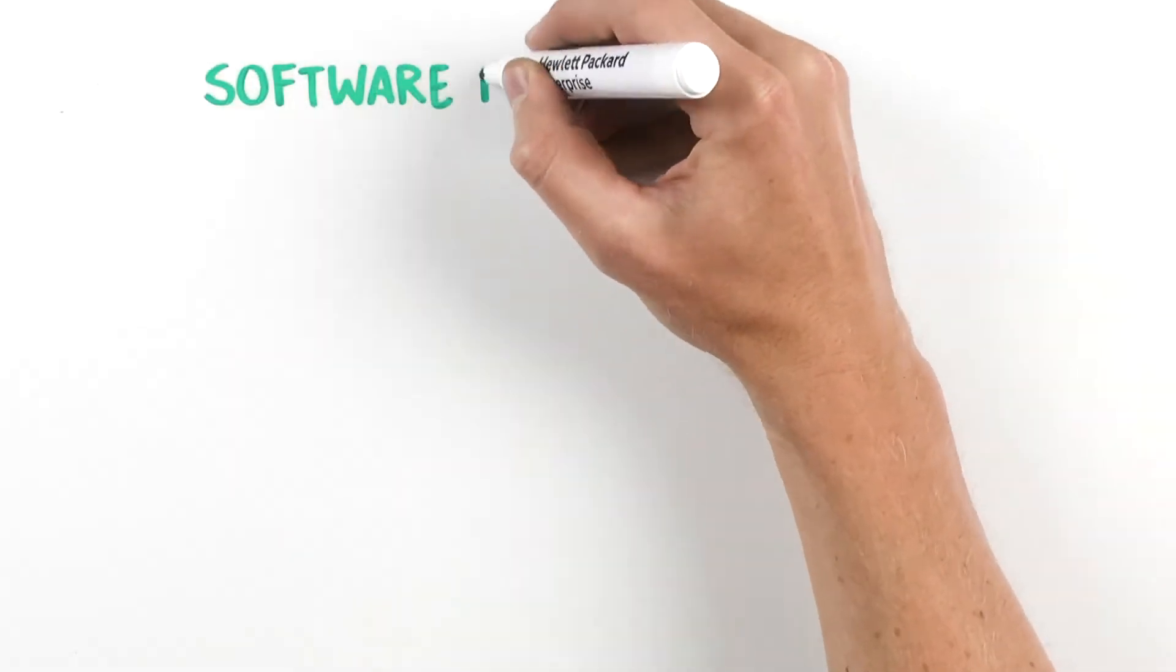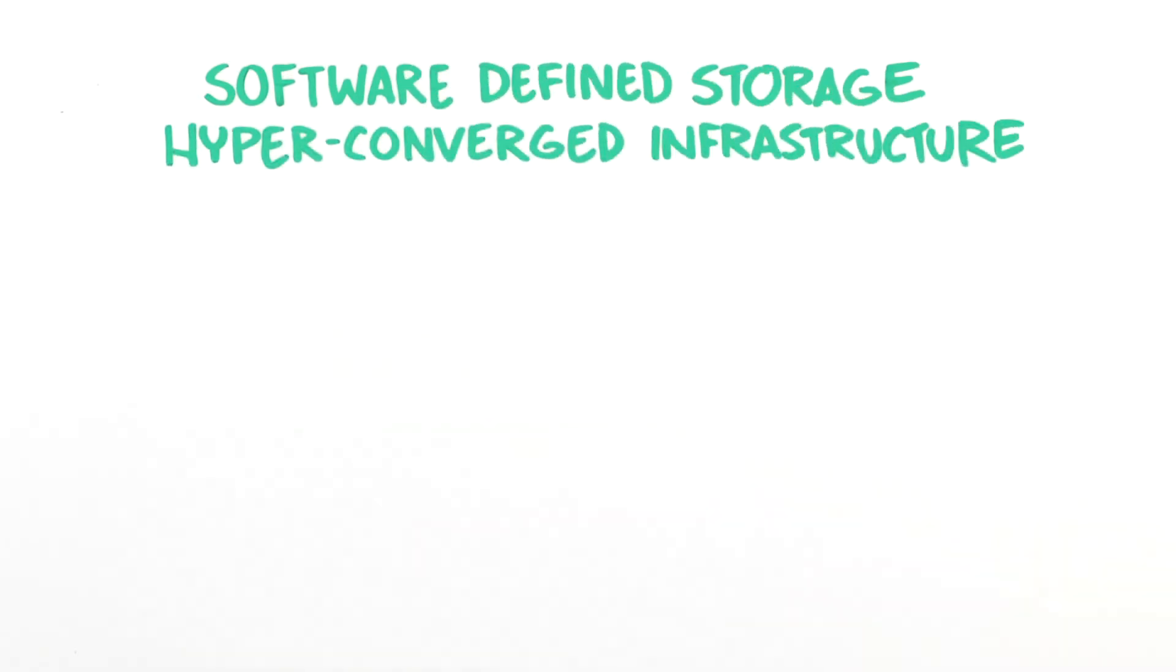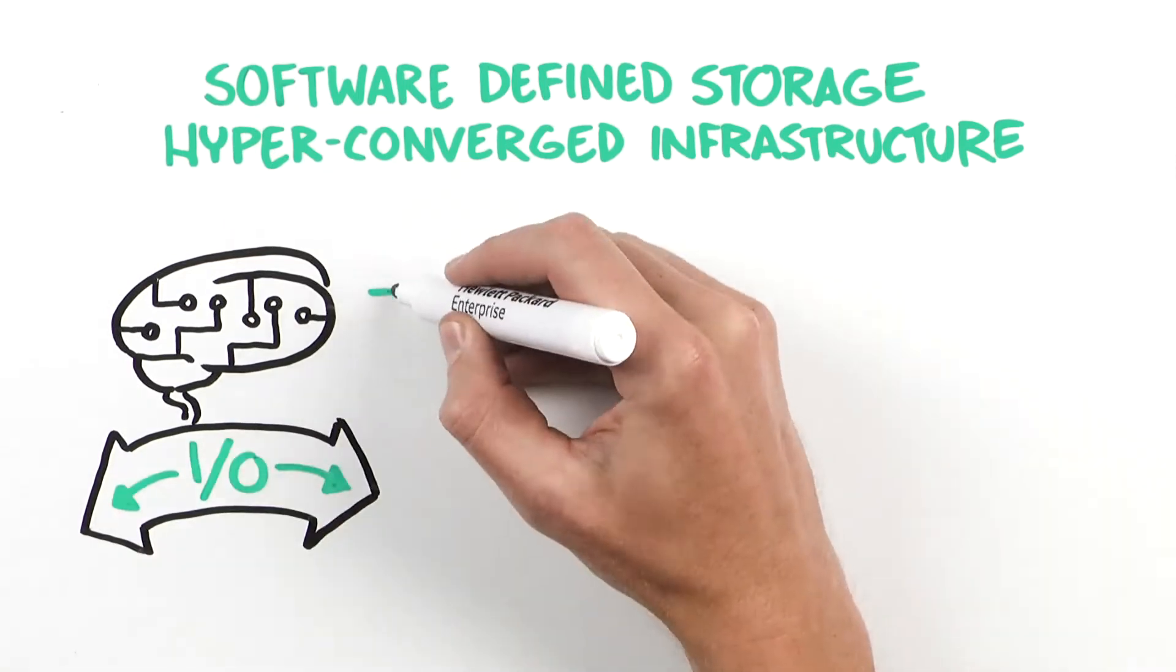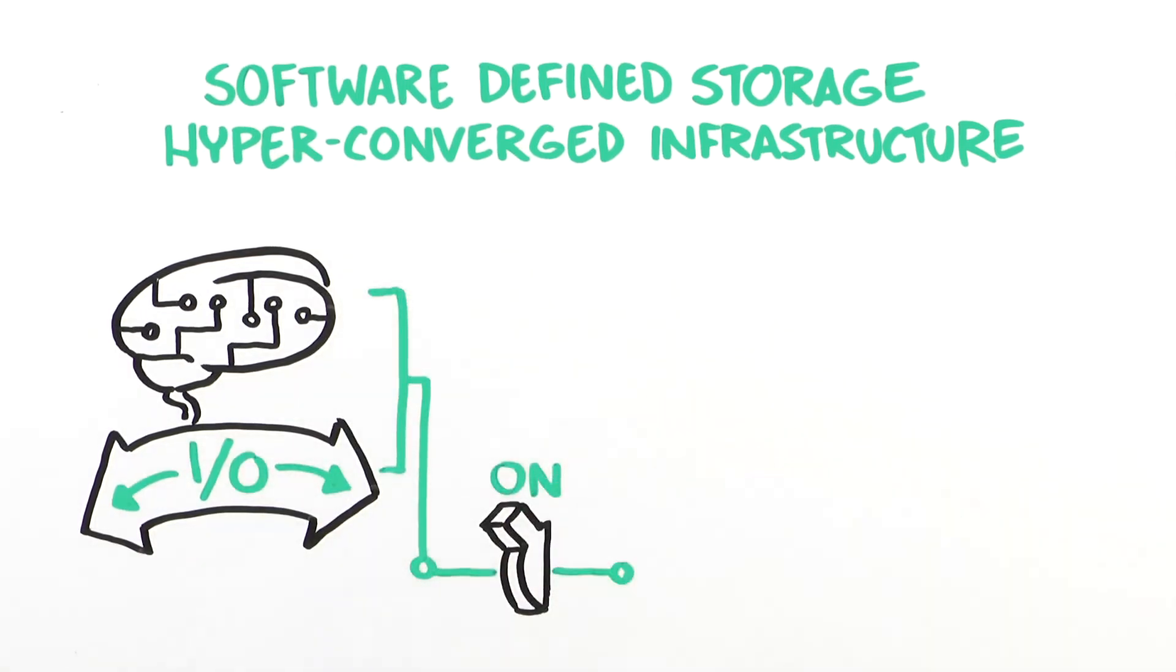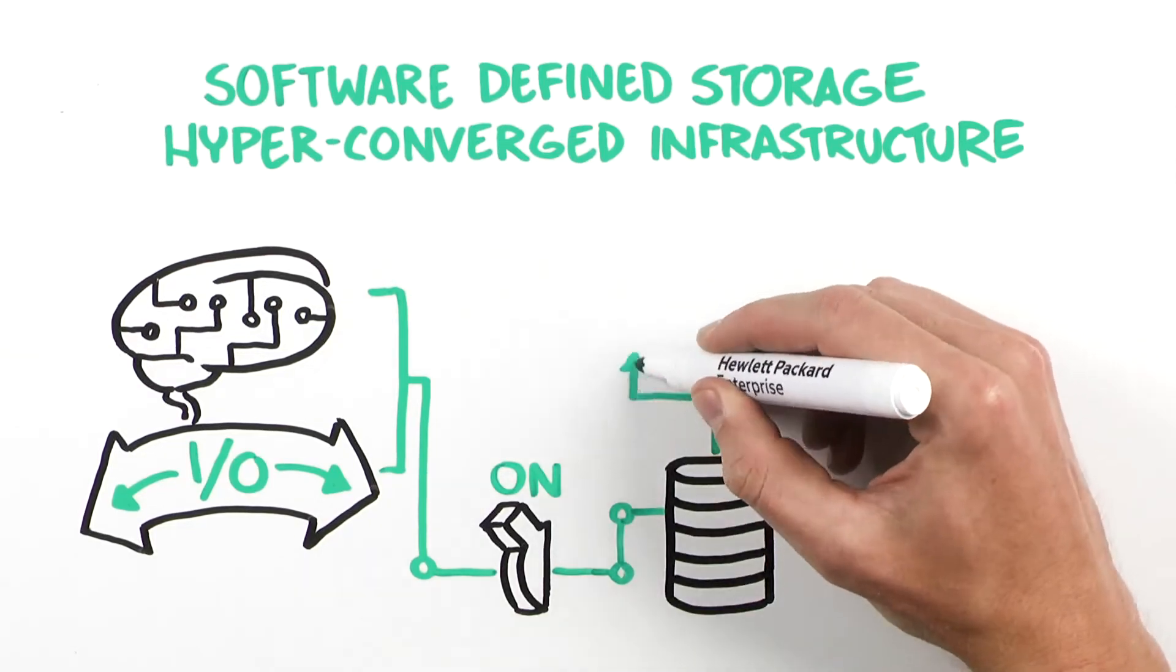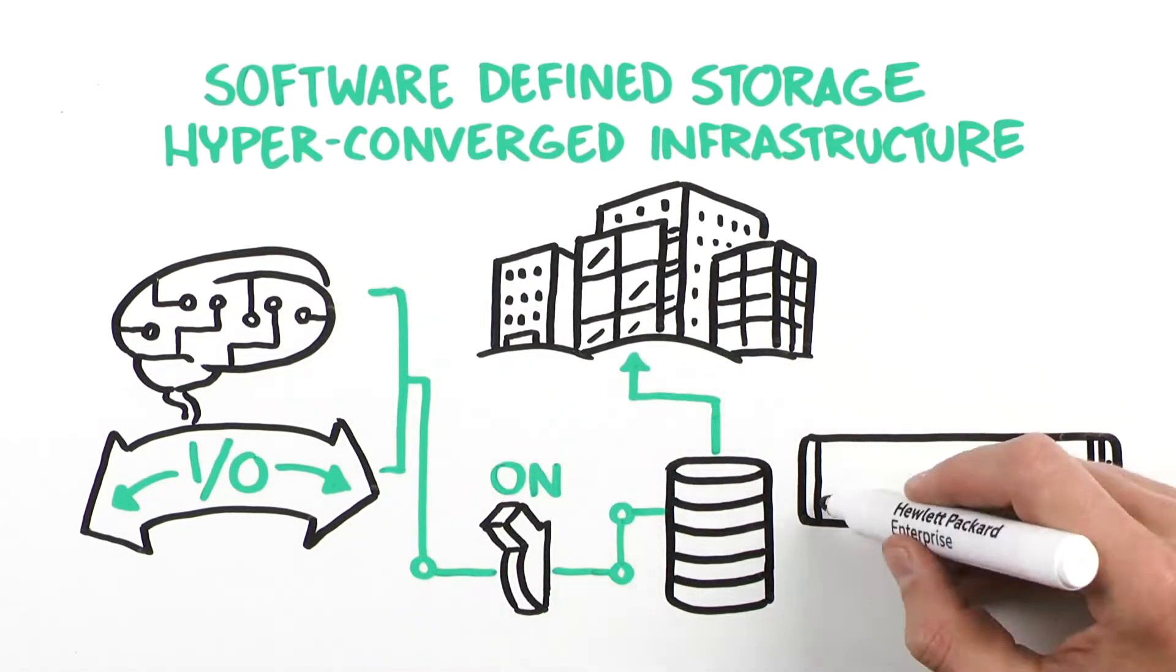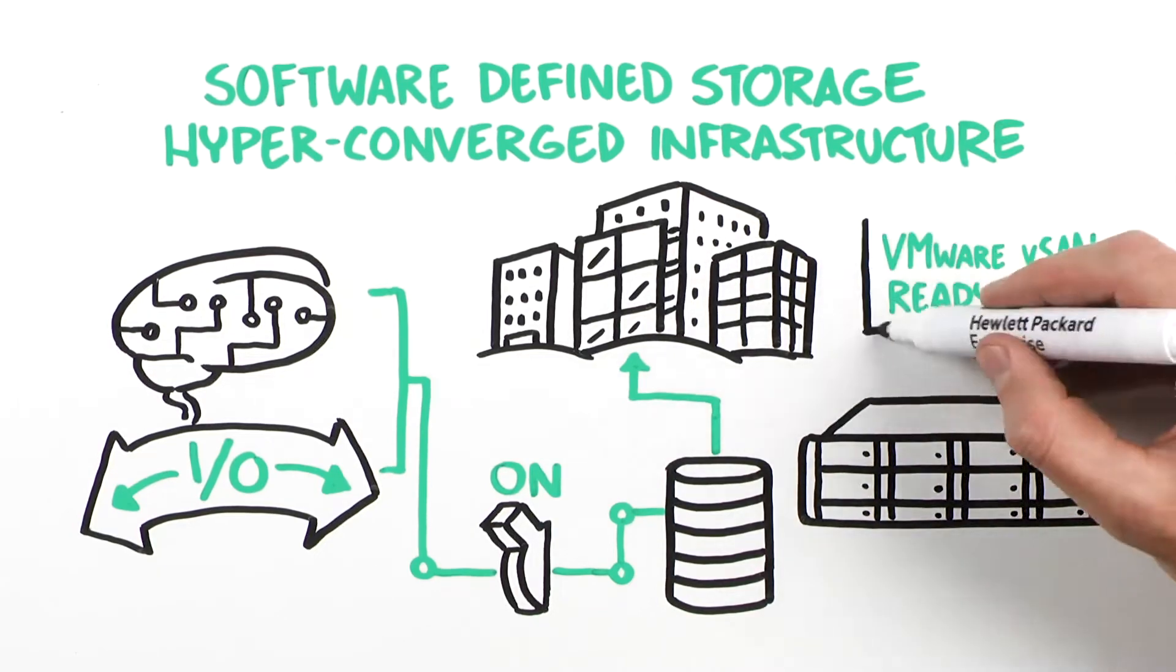Software-defined storage, SDS, and hyper-converged infrastructure, HCI. Increased memory capacity and I/O bandwidth provide increased performance for your always-on data access. The increased I/O bandwidth provides you with the ability to scale on the fly as your business needs grow. The HPE ProLiant DL385 has VMware vSAN ready-node configurations.